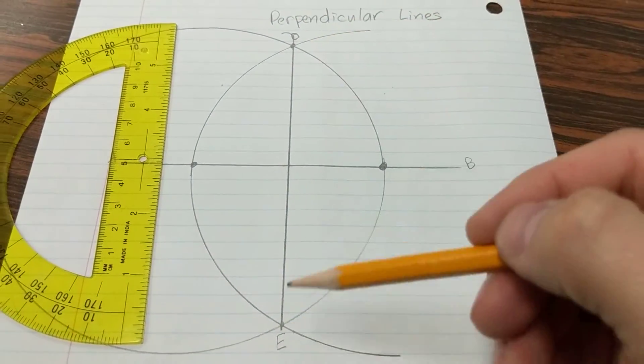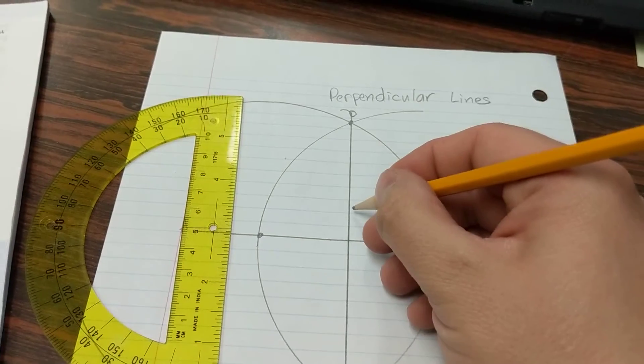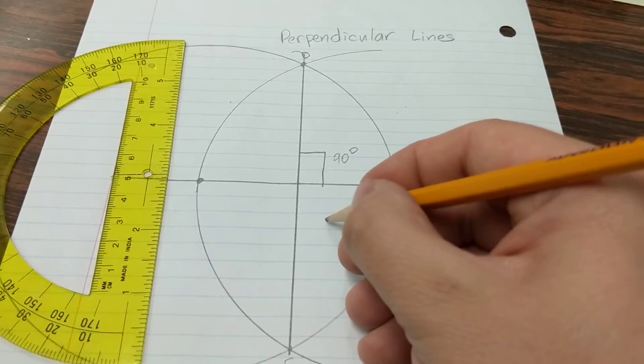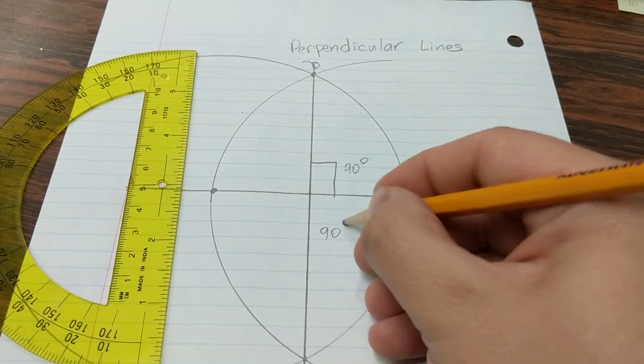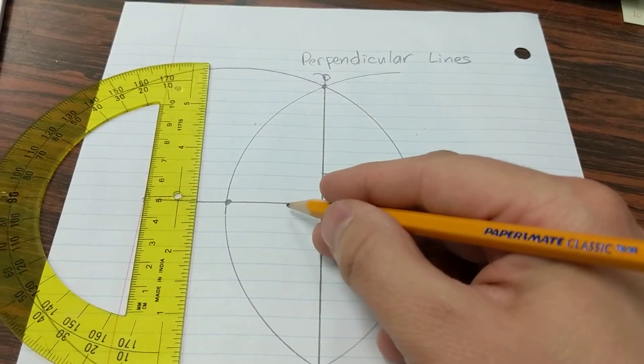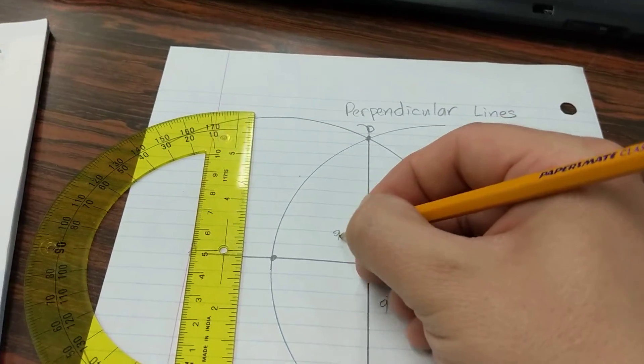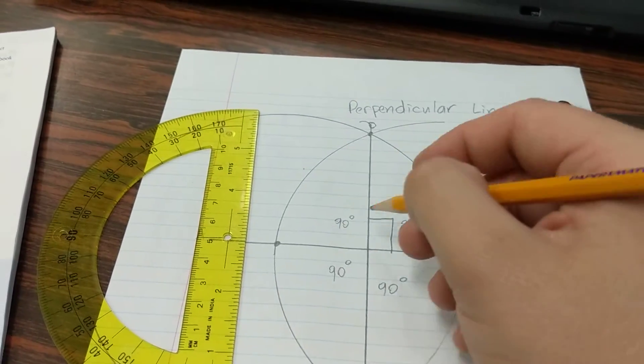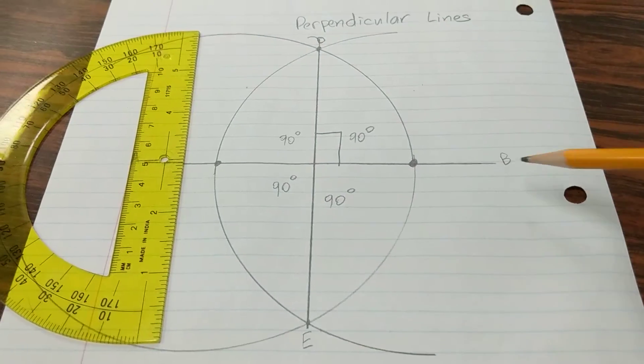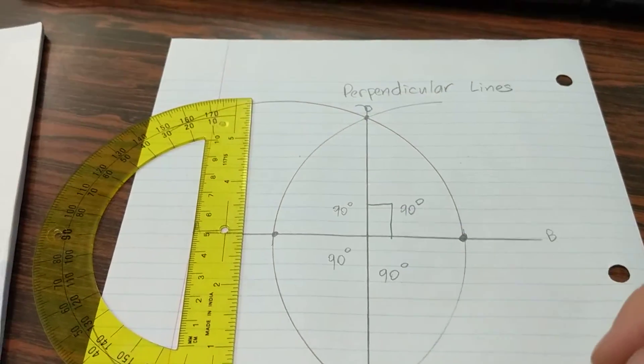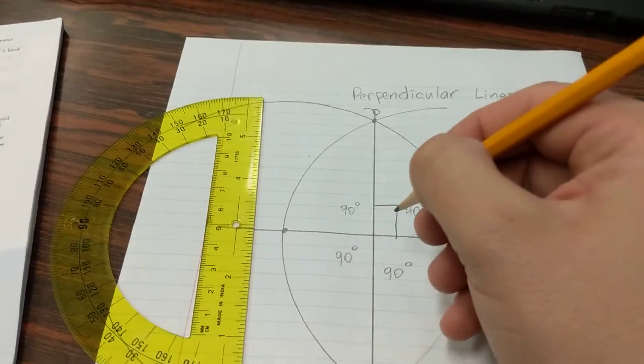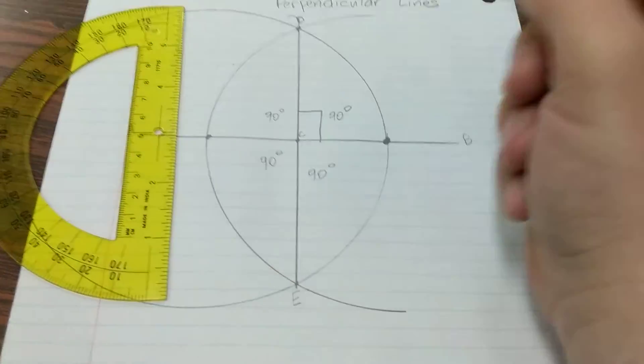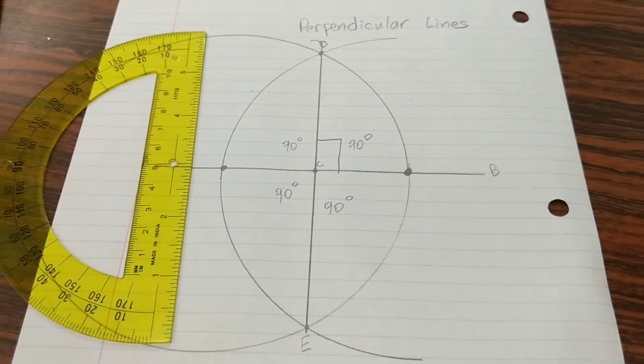So right here is a 90-degree angle, right here is another 90-degree angle. From this line to this, another 90 and 90 here. Four times 90 is 360 degrees, so a complete turnaround. So AB and ED are perpendicular and they meet at what I call point C, the center.